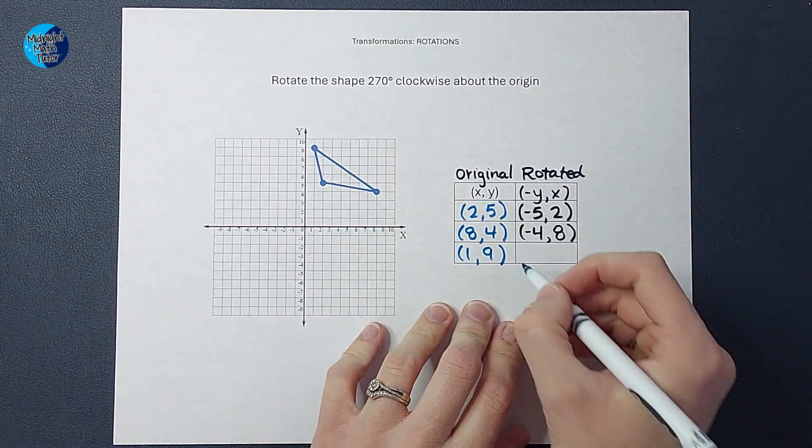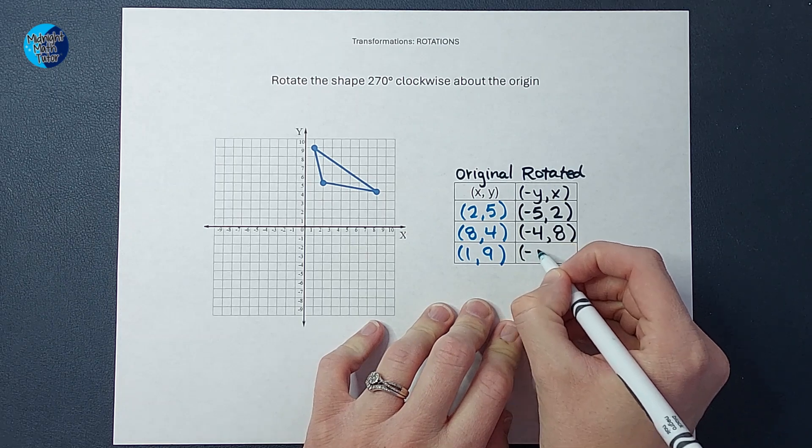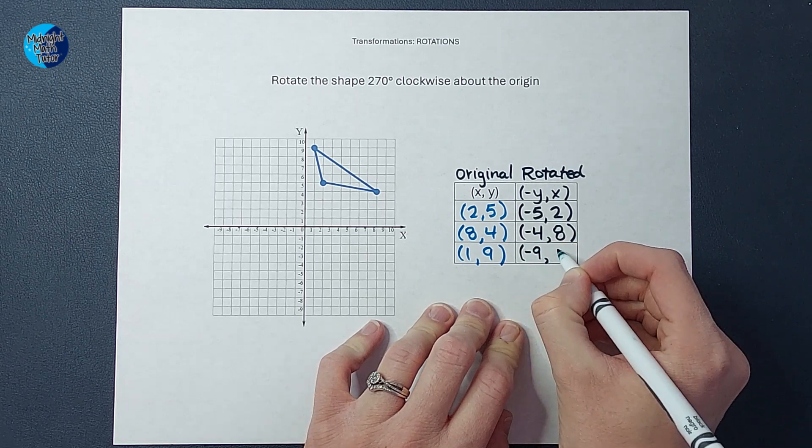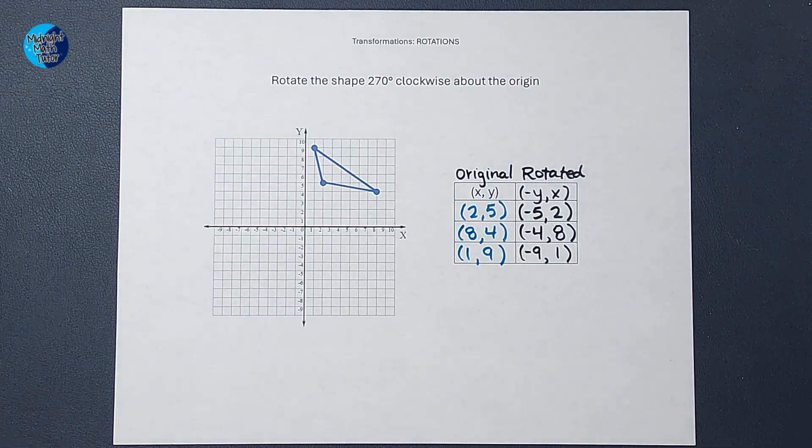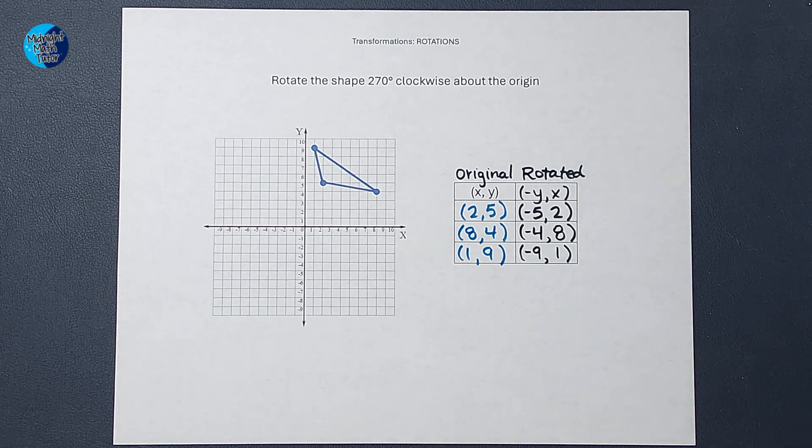All right, last one. I'm going to write Y first and change its sign and write X, 2. All right, there are my new points. Now I am going to graph those.